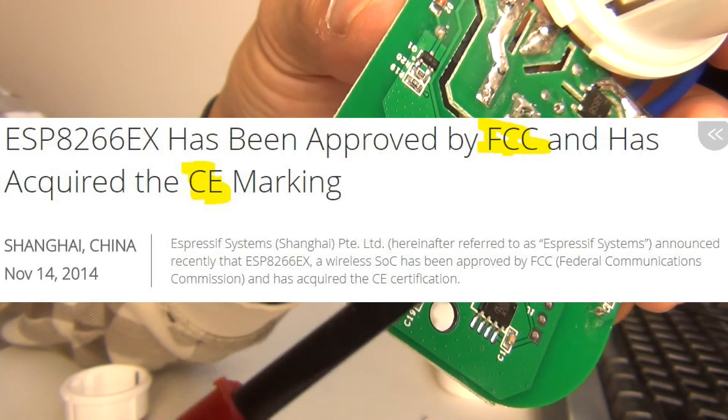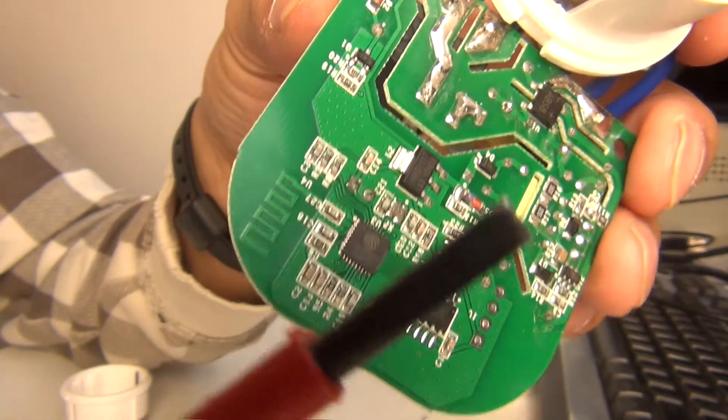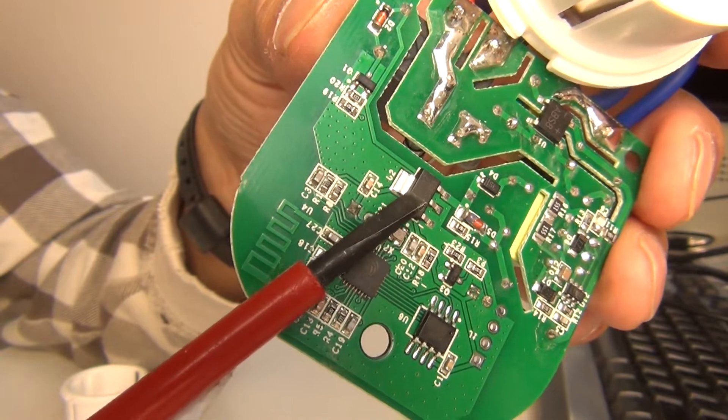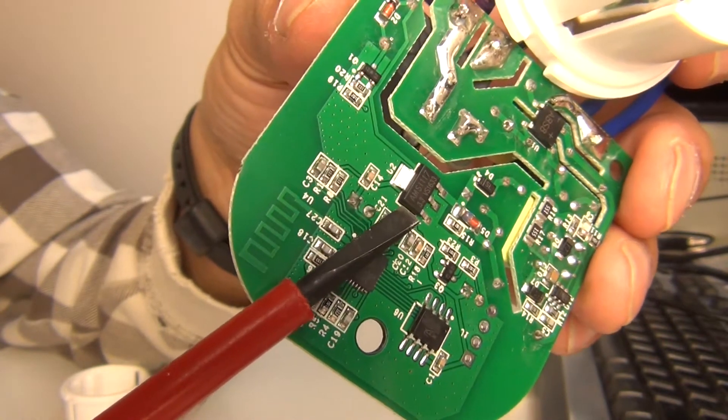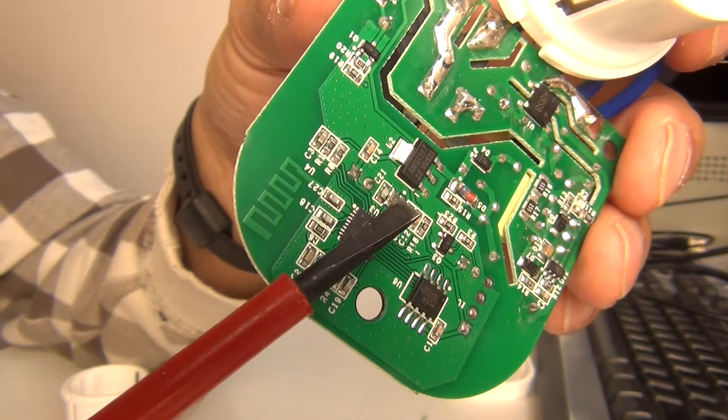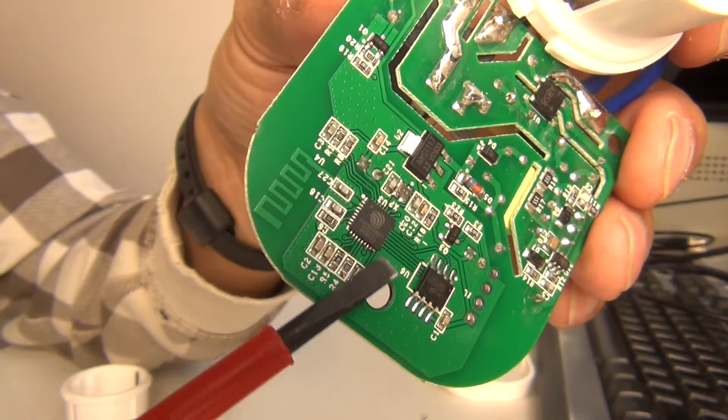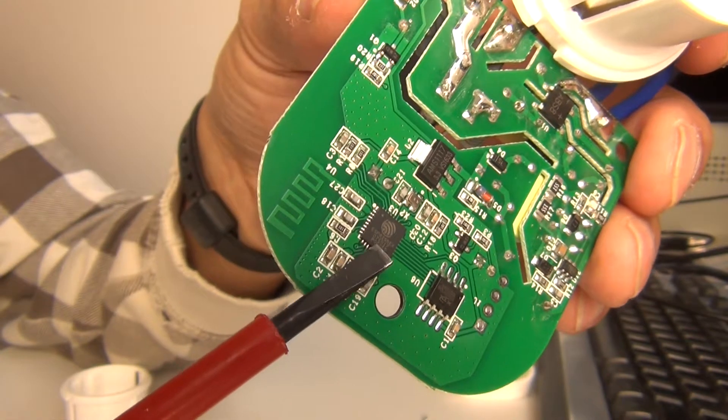Over here you can see it's a very well-known brand, AMS1117. It brings down the input voltage to 3.3 volts and this is the working voltage for this wireless chip.